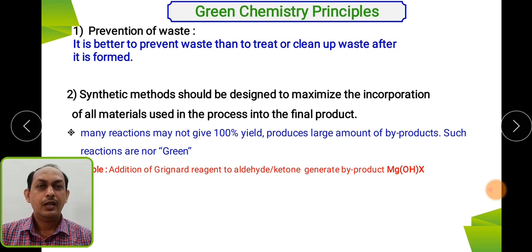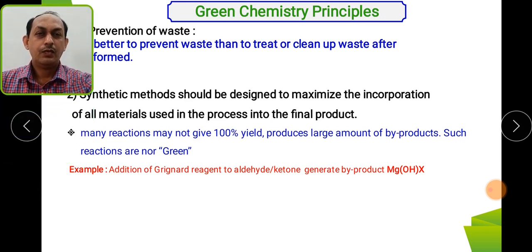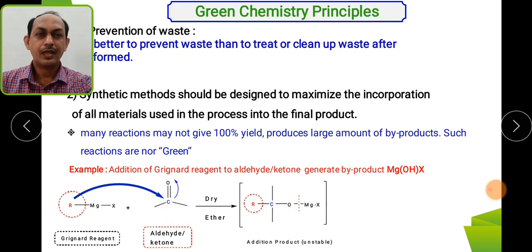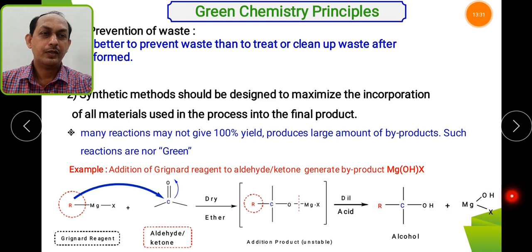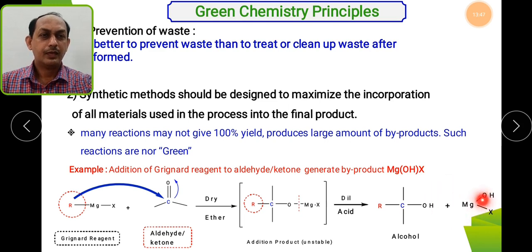The second principle: synthetic methods should be designed to maximize the incorporation of all materials into the final product. Many reactions do not give 100% yield, producing large amounts of byproducts and hazardous waste — making the synthesis not green. For atom economy, consider for example the addition of a Grignard reagent to an aldehyde or ketone: it generates the byproduct MgOH·X, which upon hydrolysis releases magnesium into the environment, creating health issues for aquatic and living organisms.